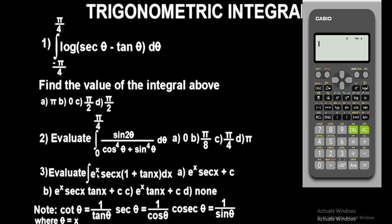In the question we have e to the power of x — press Shift and the e^x button — times sec x, which is 1 over cos x. Enter it as a fraction: 1 over cos x (Alpha, x button), close the bracket. Then place the exponential in front. After that, input the bracket with 1 plus tan x (Alpha, x), and close the bracket.